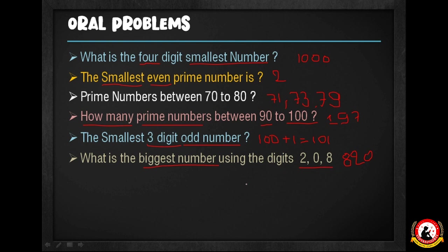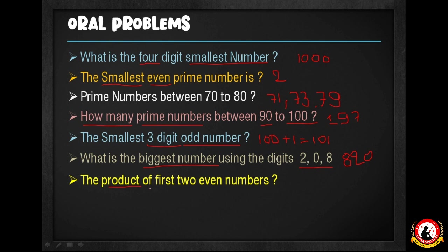Next question: what is the product of the first two even numbers? The first two even numbers are 2 and 4. We need to multiply them: 2 times 4 equals 8. The answer is 8. Okay, so I will multiply the first two even numbers to get 8.